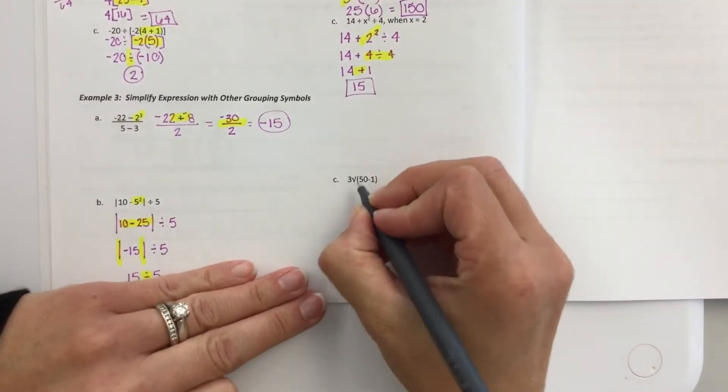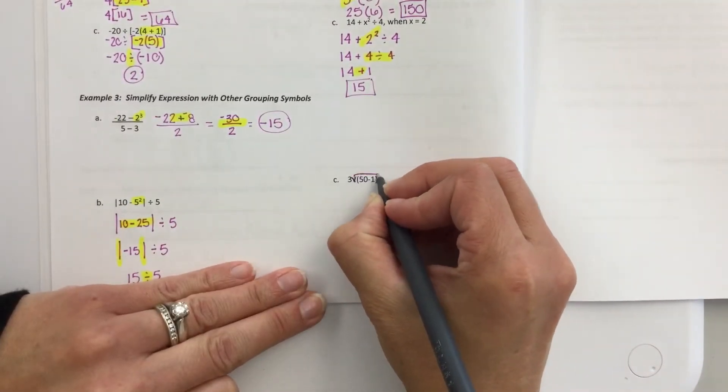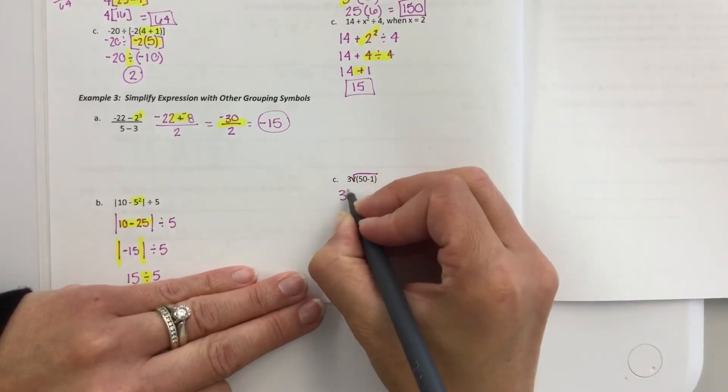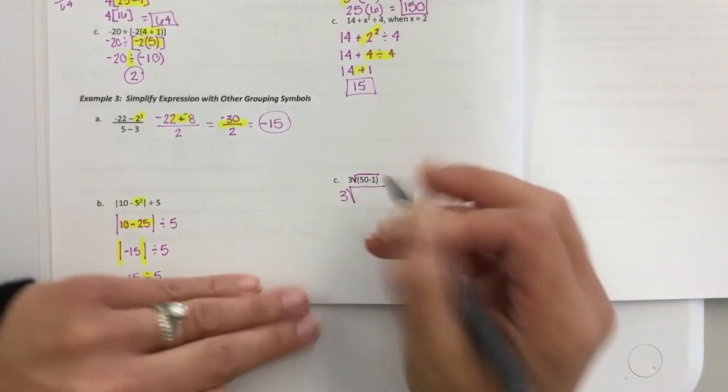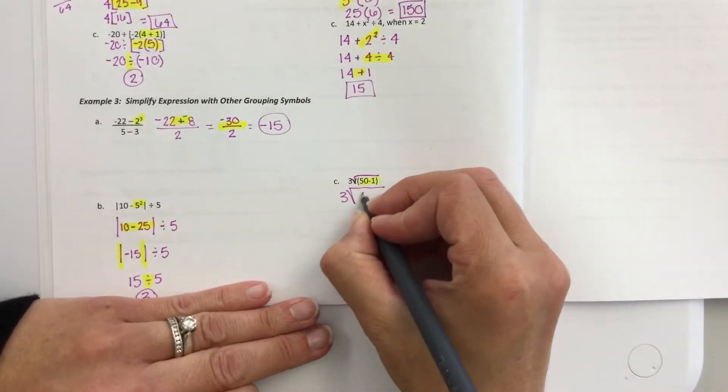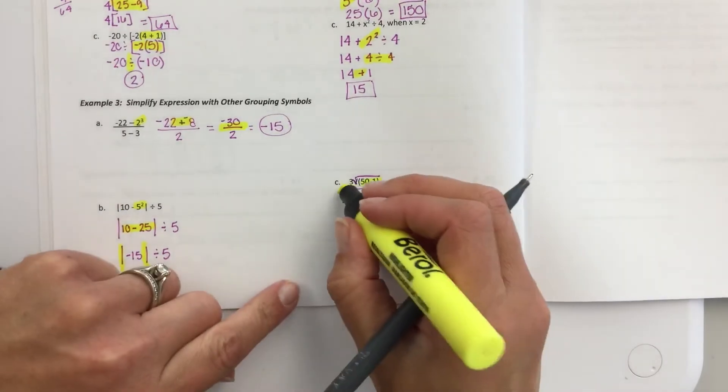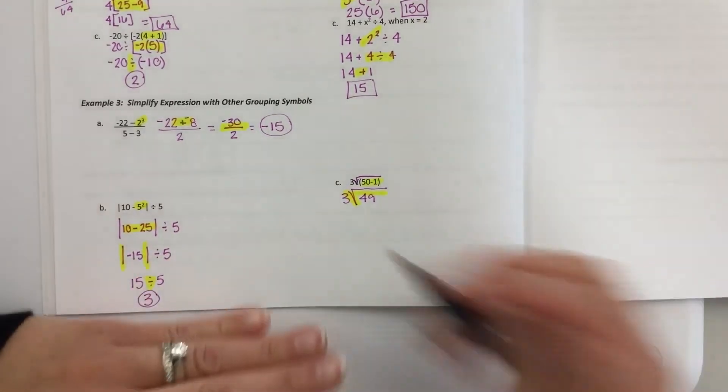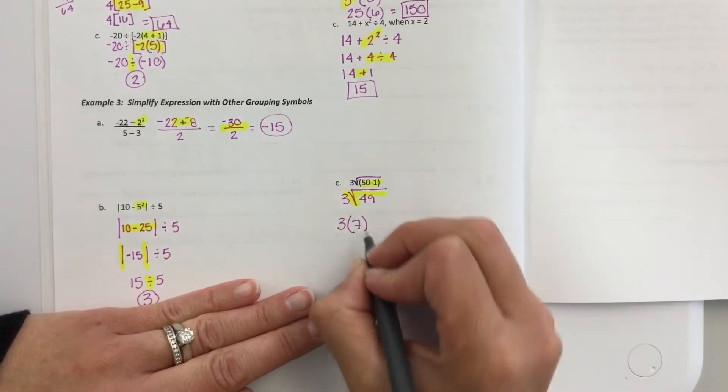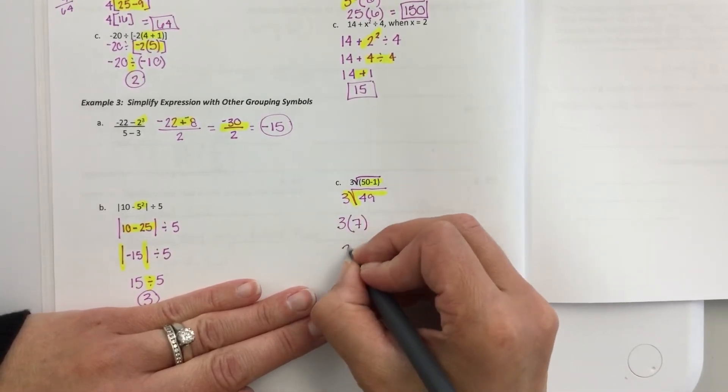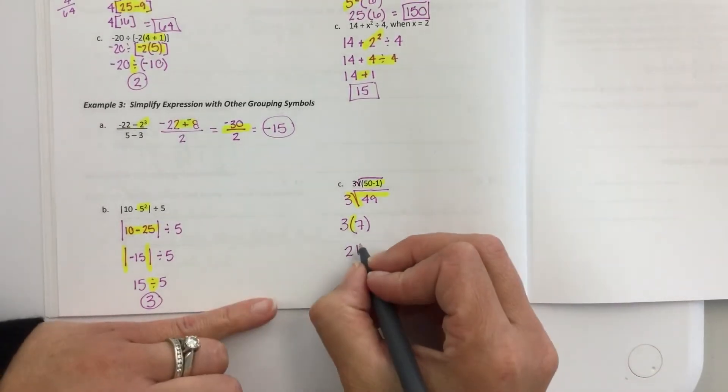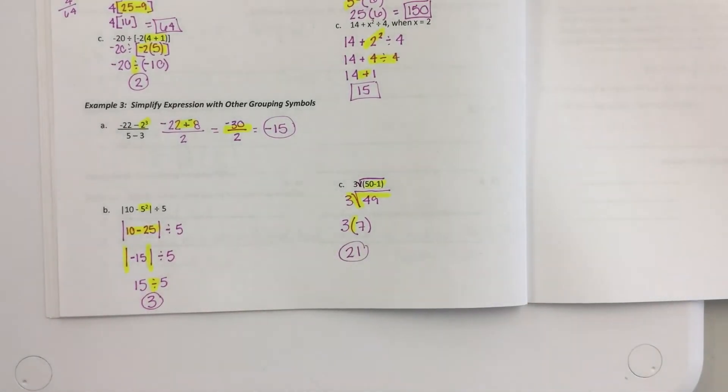Okay, this is a square root. I know you can't see it perfectly. So a square root, you have to do what's underneath the square root before you can do any other operations. So 50 minus 1 is 49. And you're going to do the square root. The square root kind of comes in where exponents come in. So 3 times the square root of 49 is 7. 3 times 7 is 21.